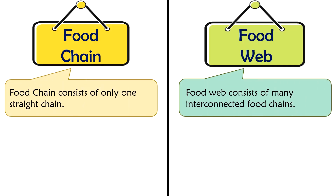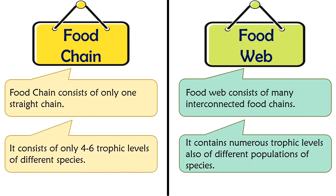Talking about the number of chains, the food chain consists of only one straight chain, whereas the food web comprises many interconnected food chains. Similarly, the food chain has limited — i.e. 4 to 6 — trophic levels of different species. On the other hand, the food web contains numerous trophic levels of different populations of different species.